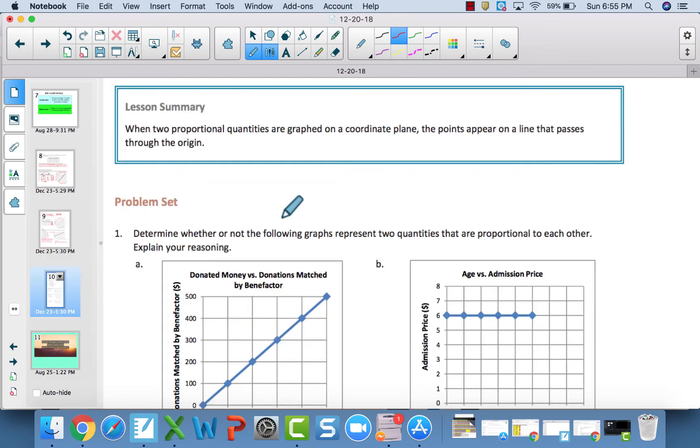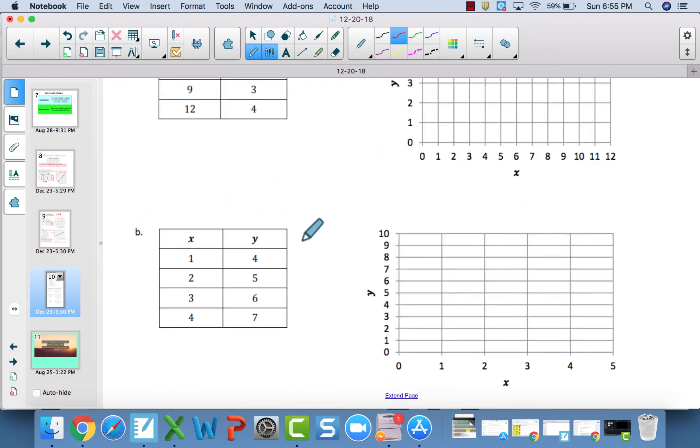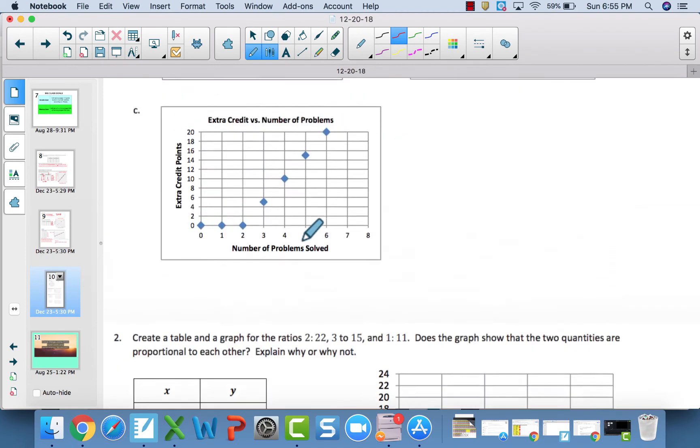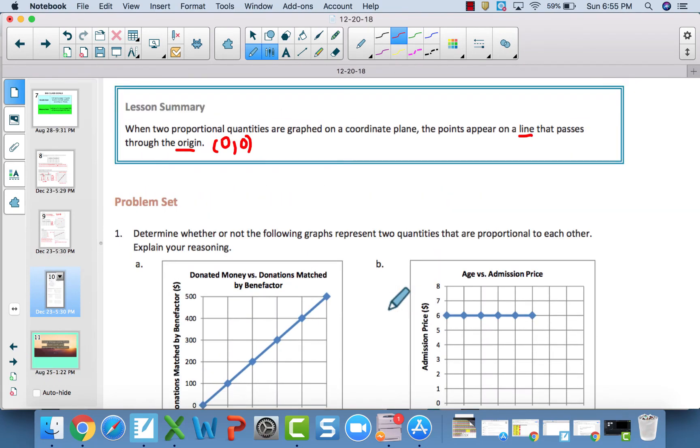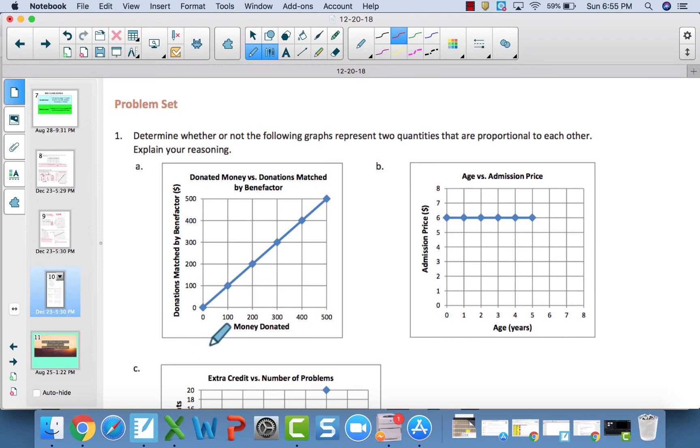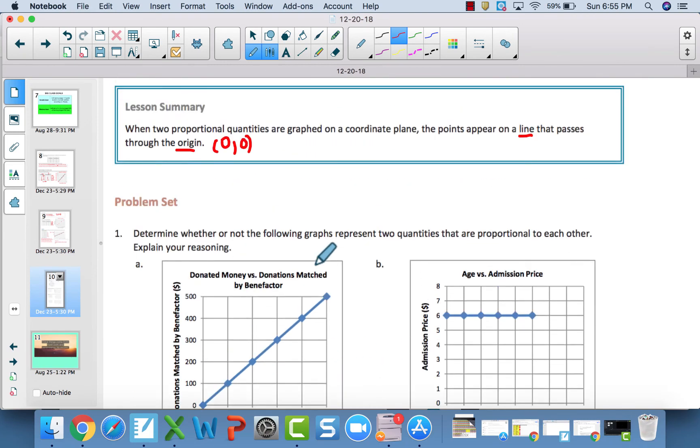Now you're going to attack this problem set. Keep in mind: when two proportional quantities are graphed, it is a straight line and needs to go through the origin—the 0, 0 point. Go through and tackle these problem set questions. As always, if you need extra space, please use a separate sheet, but it doesn't look like you'll need one. With explaining your reasoning, maybe write a bit small, then come back and check your work. That will be the end of lesson five on proportionality when it comes to graphs.